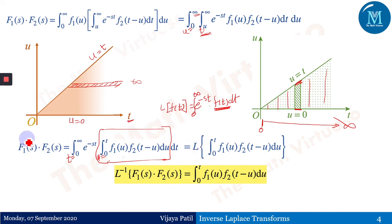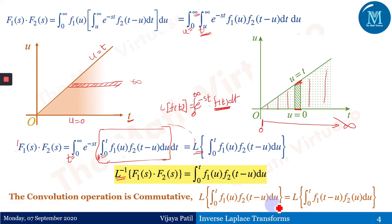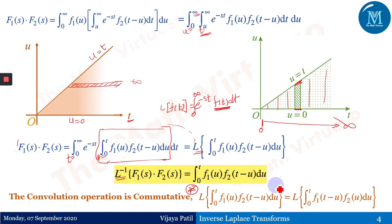So F1(s)·F2(s) = L{ integral from 0 to t of f1(u)·f2(t−u) du }. Taking the inverse Laplace transform on both sides completes the proof. Additionally, it is important to note that the convolution integral from 0 to t of f1(u)·f2(t−u) du equals the integral from 0 to t of f1(t−u)·f2(u) du, which shows that the convolution operator is commutative. That concludes today's session — thank you, happy learning.